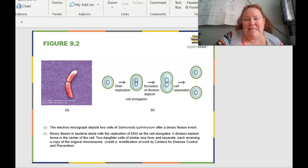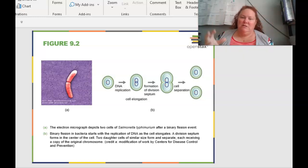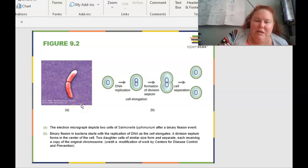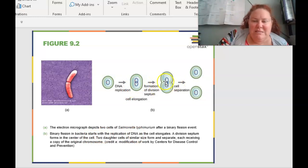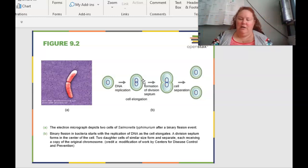A little bit about how cells replicate and divide. The electron micrograph on the left depicts two cells of Salmonella typhimurium after binary fission. So binary, bi means two. Fission is things that are starting to fuse or separate. Binary fission in bacteria starts with the replication of the DNA as the cell gets longer. And then the division septum or divider is going to form in the center of the cell. And then the two daughter cells are going to branch off and they're going to be in similar size and form, and they're going to separate and they each receive a copy of the original chromosome.